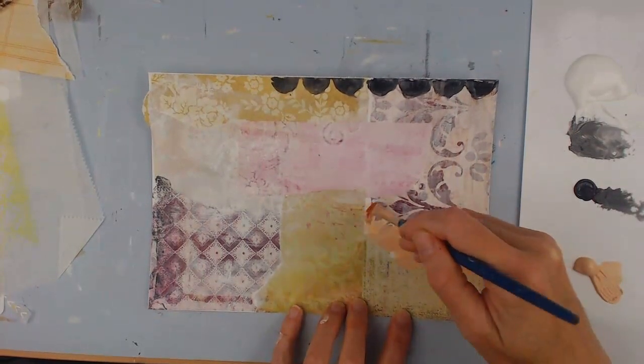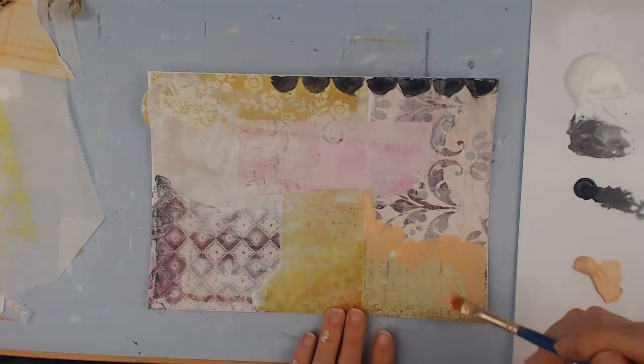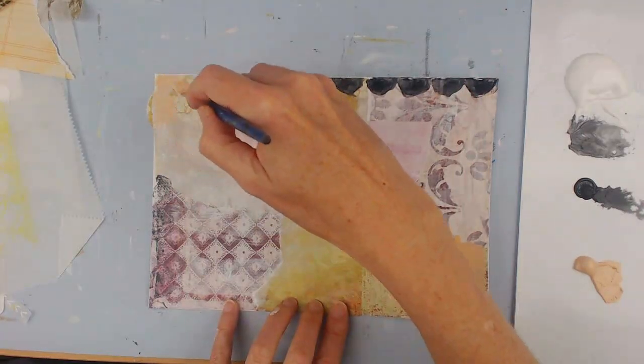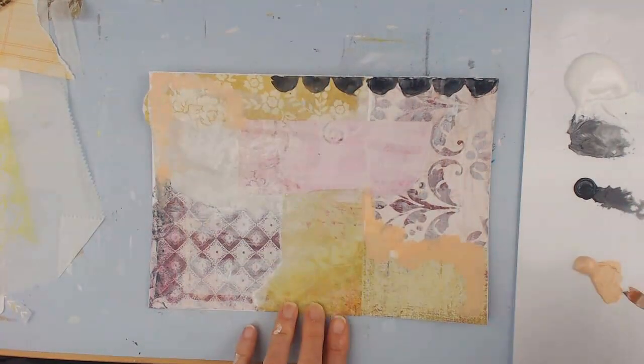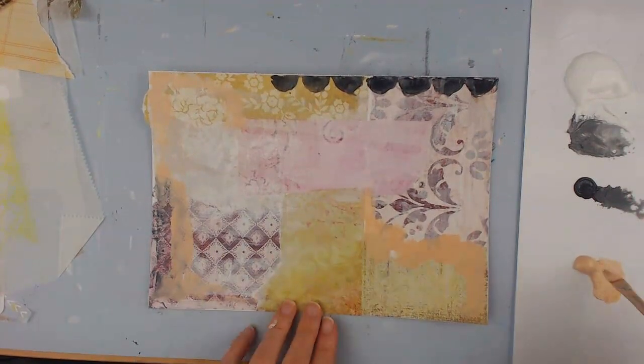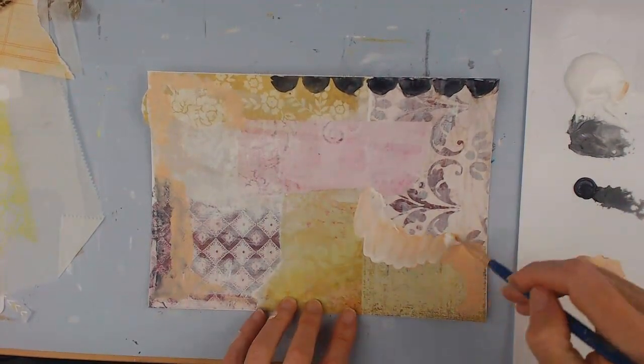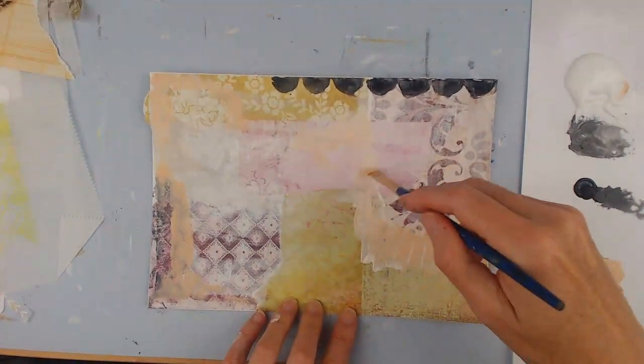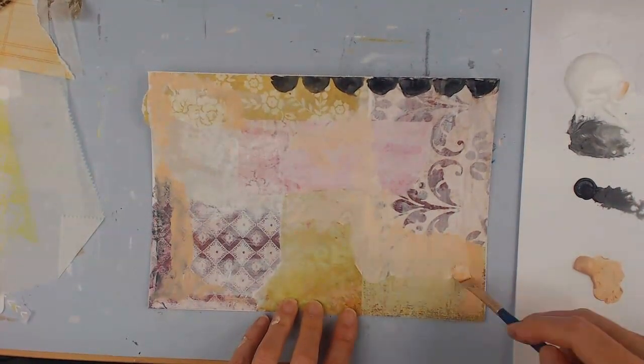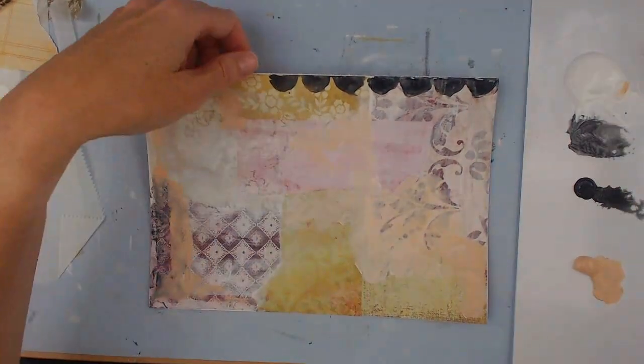So that is a rose pink that I'm using, and just kind of getting a different color down, different layer. Not really thinking too much—I like to try to blend the pieces together so it doesn't look like so many different pieces of paper.